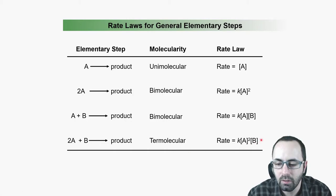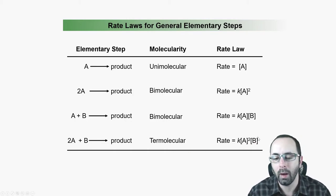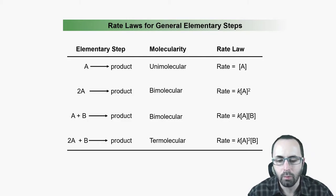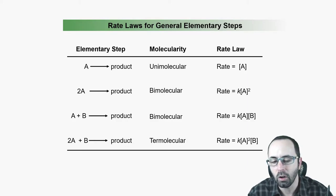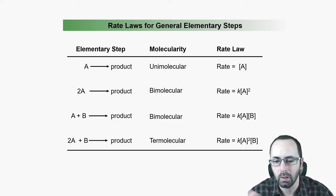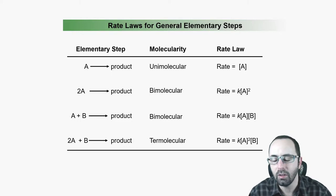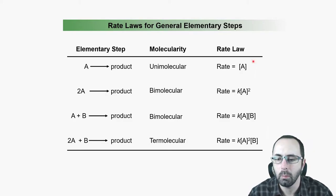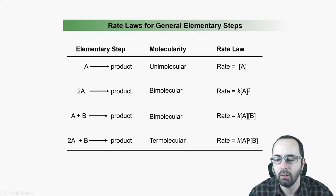One note about termolecular reactions: they are exceedingly rare. Three molecules colliding is a rare event — two molecules colliding is very common, but three molecules hitting each other in just the right way to react is super rare. So if someone proposes a termolecular elementary step, they need very solid evidence for people to believe it. Most reasonable elementary steps are going to be unimolecular or bimolecular. Although termolecular steps do happen, they tend to happen in very slow reactions because they're very unlikely.